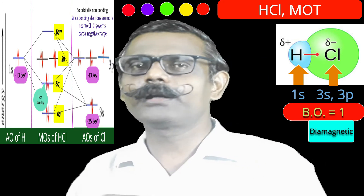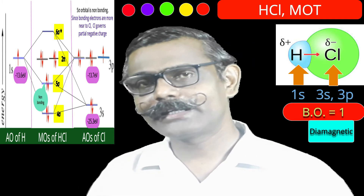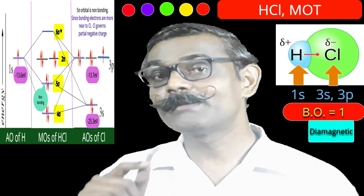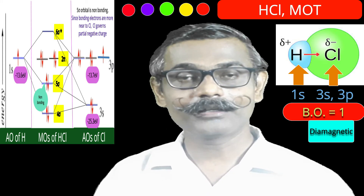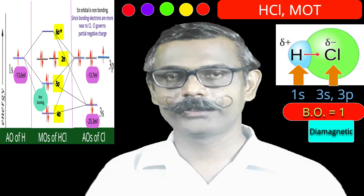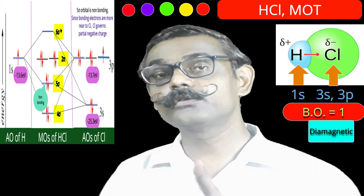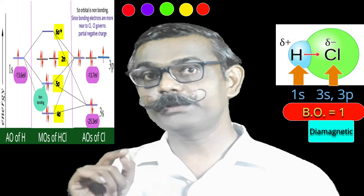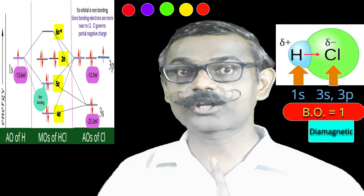The inner chlorine orbitals — 2p, 2s, and 1s — will remain non-bonding. Regarding symmetry labels: s orbitals have sigma symmetry, and p orbitals have two sets — one sigma (the 2px bonding axis orbital) and one non-bonding pi set (2py and 2pz). So for chlorine: 1s is labeled 1σ, 2s is 2σ, 2px is 3σ, and 2py/2pz form the 1π set — the first set of pi orbitals.